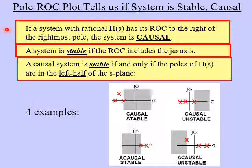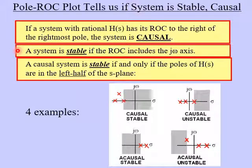We can summarize this with a set of simple rules. The pole-ROC plot tells us if the system is stable or causal. Rule one: if a system with a rational transfer function has its region of convergence to the right of the rightmost pole, then the system is causal. Rule two: a system is stable if the region of convergence includes the j-omega axis. Combining these: a causal system is stable if and only if the poles of the transfer function are in the left half plane of the S-plane.